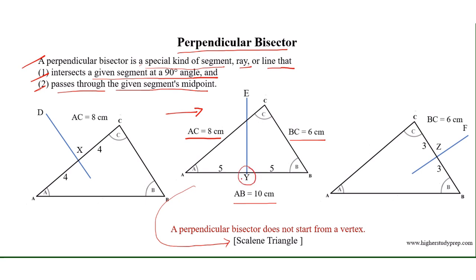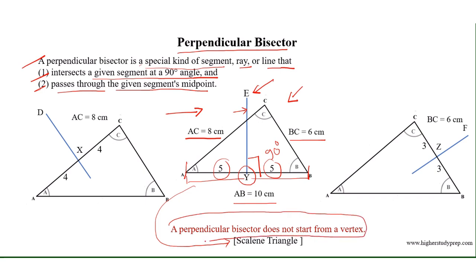Y is the midpoint of AB because AY equals YB equals 5 cm. Through Y, the segment EY intersects AB at a 90-degree angle, which is why EY is the perpendicular bisector of triangle ABC on side AB. For a scalene triangle, a perpendicular bisector does not start from a vertex. Similarly, DX and FZ are the perpendicular bisectors of triangle ABC with respect to sides AC and BC.